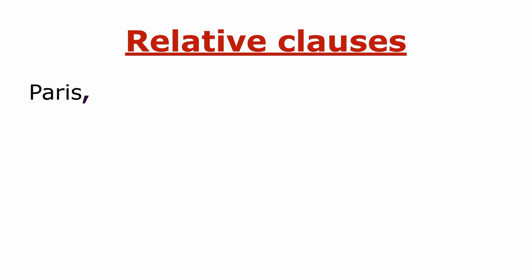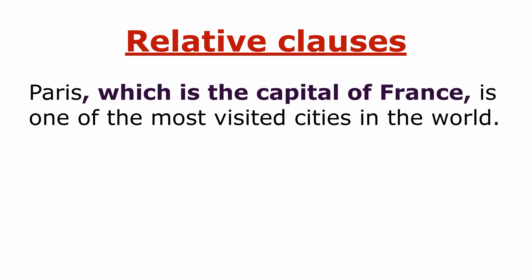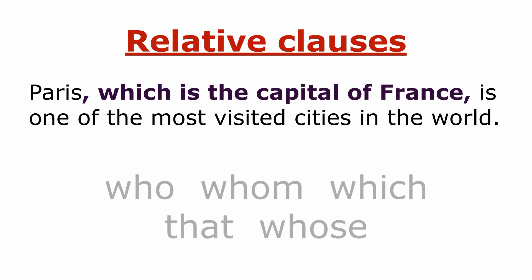Instead of an appositive, you may use a relative clause as well. For example: 'Paris, which is the capital of France, is one of the most visited cities in the world.' Here, instead of an appositive, we used a relative clause by adding the relative pronoun 'which.'